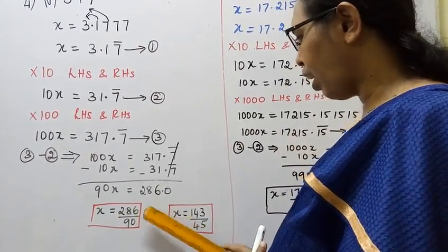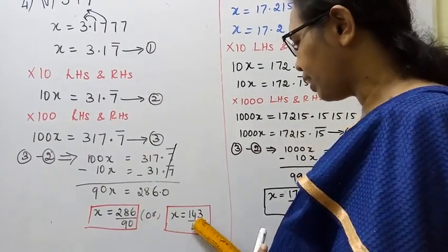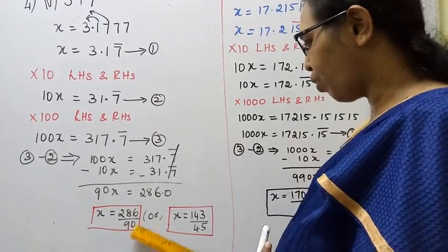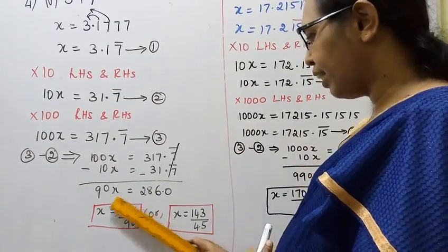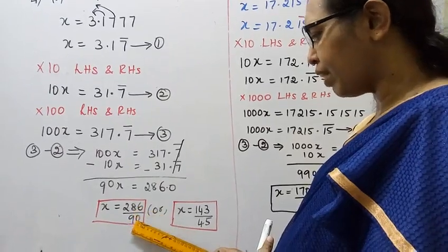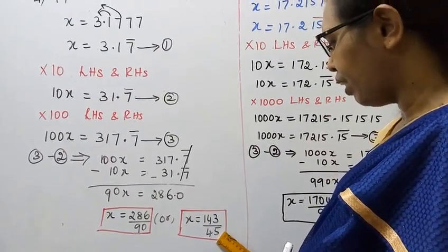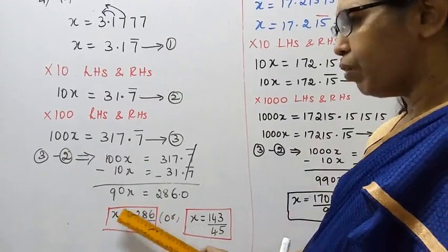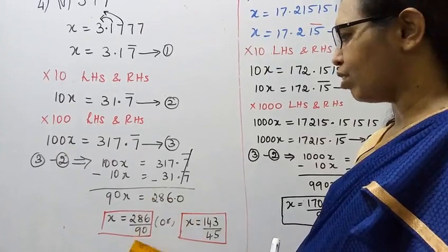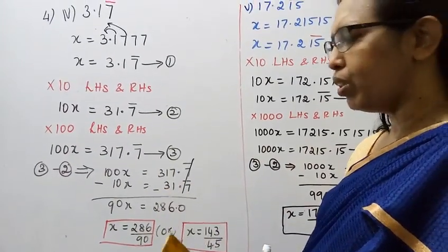So the answer is x equal to 286 by 90. This is the answer for the 9th exercise subdivision.